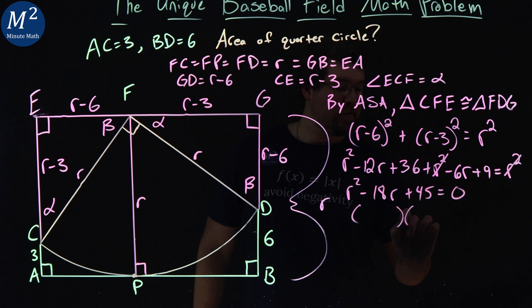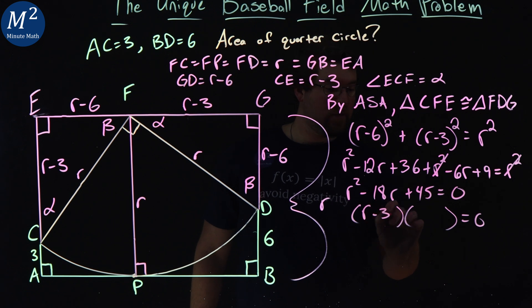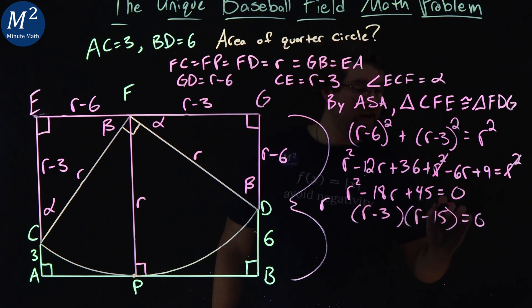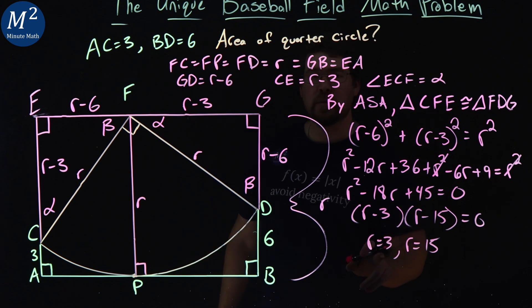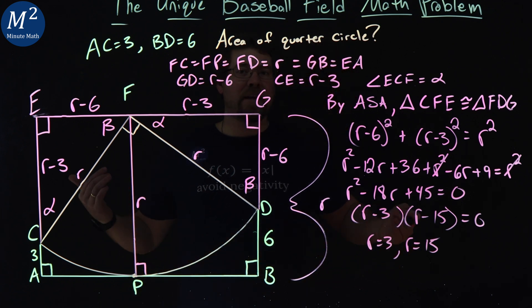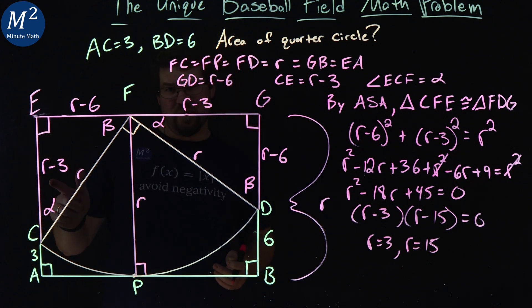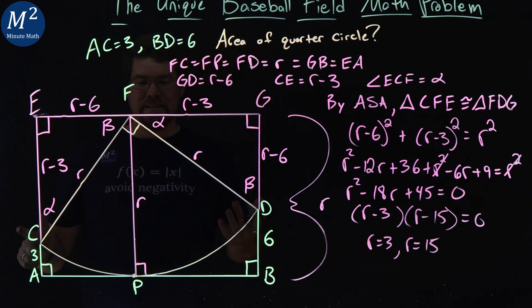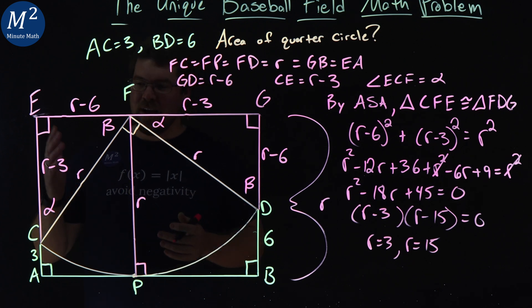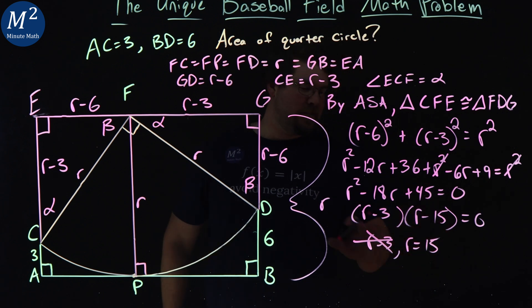We can factor this. What two numbers add to be negative 18, multiply it to be 45? We have an R minus a 3, and R minus a 15. So our two values that R could be is R equals 3 and R equals 15. Now, let's look at R equals 3 as an option. Can that actually be a value? And the answer is no. If the length of EC is R minus 3 and R is 3, that means that length is 0, and it's not going to work out, it can't work here. So not using R minus 3, that doesn't work, it's an extraneous solution, not a solution.